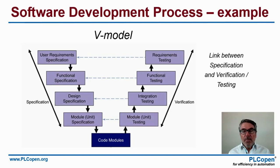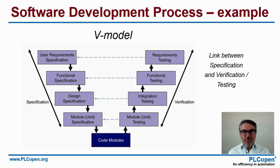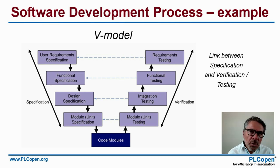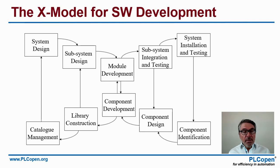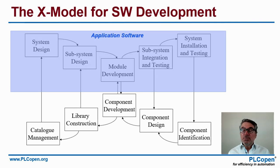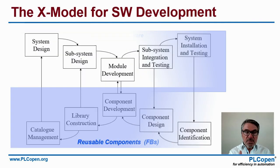You have the V-model, where there is a link between the specifications on the left side and the verification on the right side. If you know what you want upfront, you know how to test it to see if it is compliant and fulfills the needs. A third example is the X-model for software development, where going from left to right you see the different phases again.